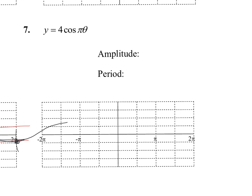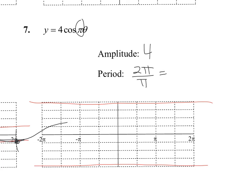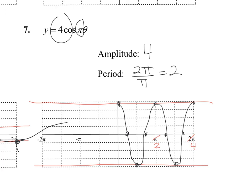Number 7: amplitude is 4. The period is 2π divided by π, which gives a period of 2. The graph is scaled with 2 and 4 marked — not in radians, just numbers. Starting at 4, within each cycle of 2 I go: 0, min, 0, max, repeating — 0, min, 0, max, like this.